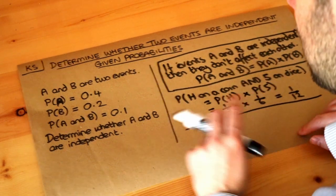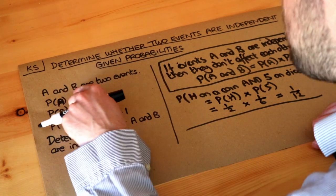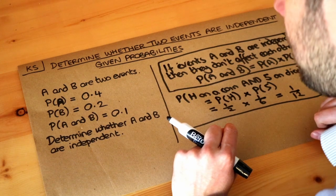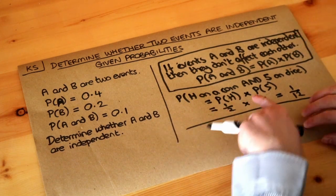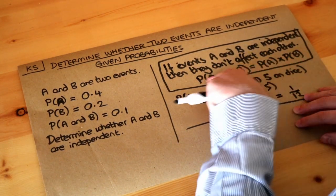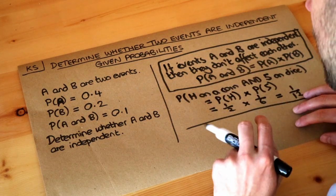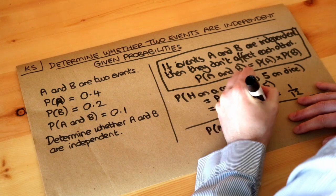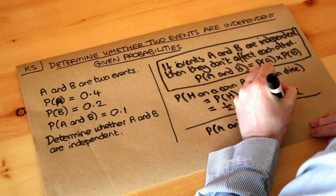Now let's apply that to this example here. A and B are two events and we want to find whether they're independent or not. If they were independent then they would follow this particular formula. We write out this formula again: the probability of A and B is equal to probability of A times probability of B.